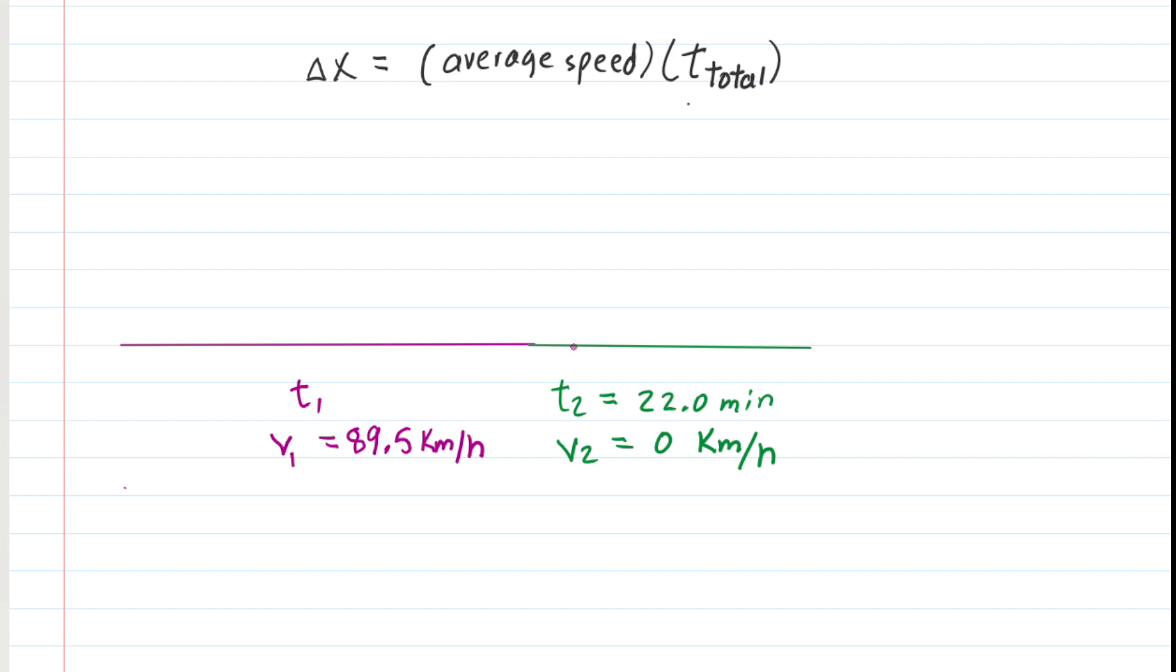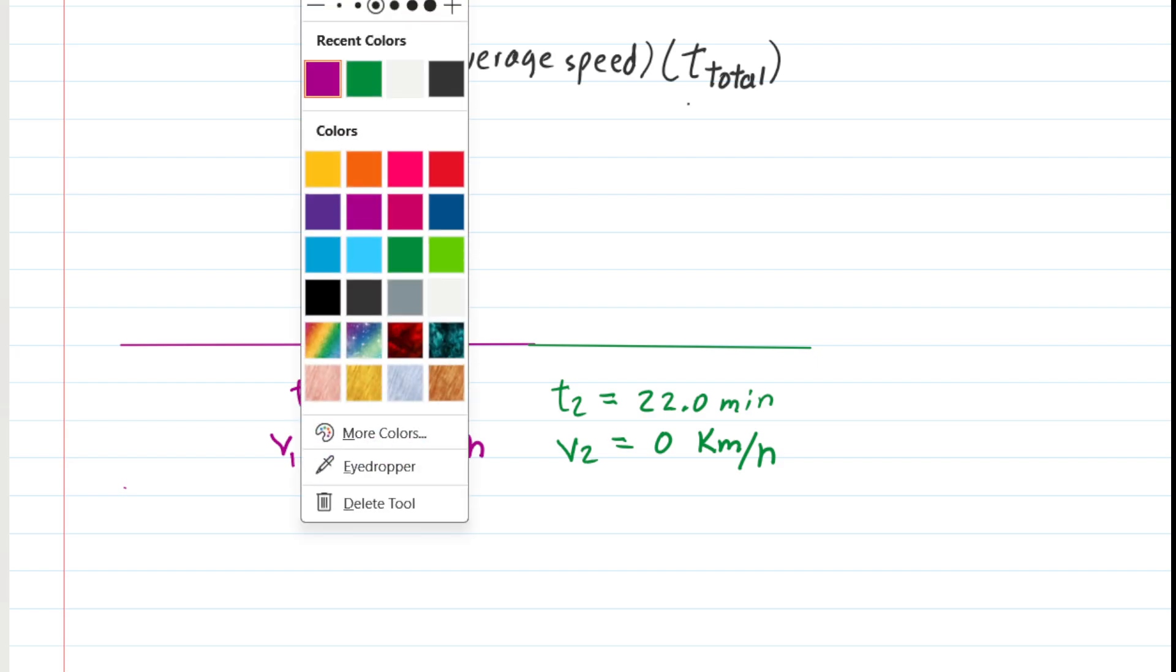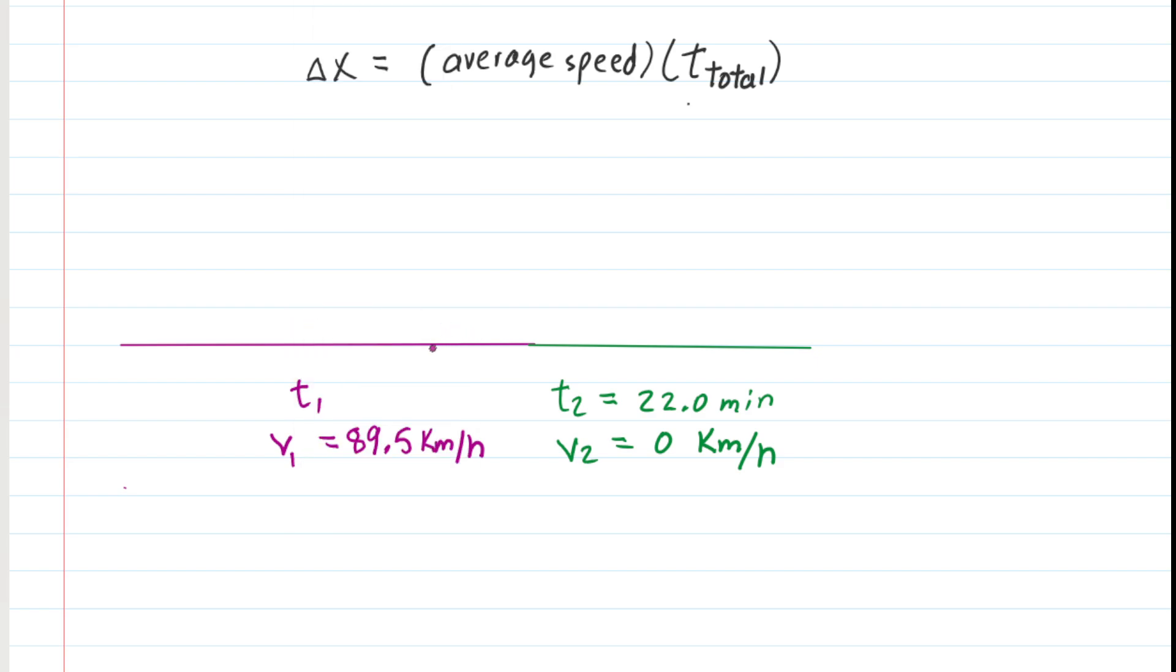For the second phase of the motion, when the driver takes a break, the amount of time during that break was 22 minutes. We've called that T2. And then the speed during that portion of the travel was zero because the driver was at rest.